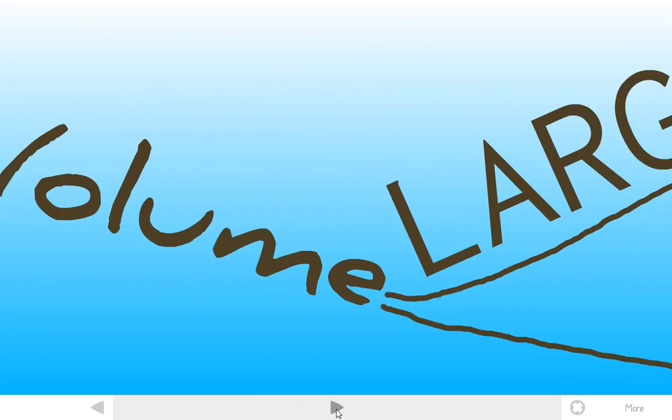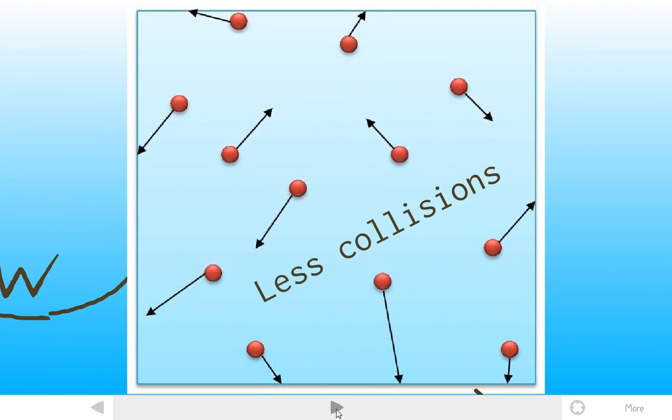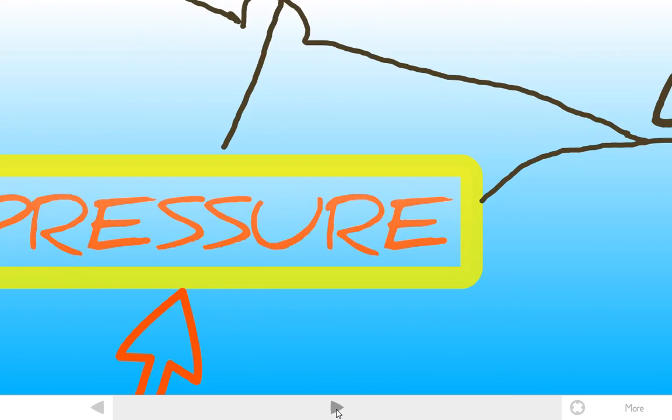But when the volume is larger, that means that there will be more space for the particles to move about. There will be less collisions, which also means that the pressure will be lower.